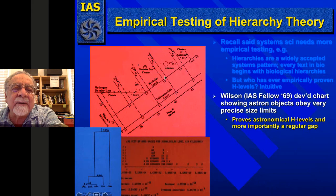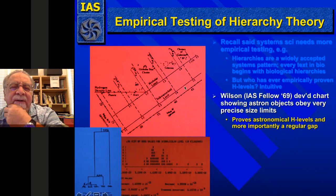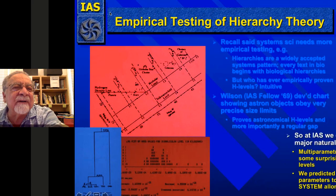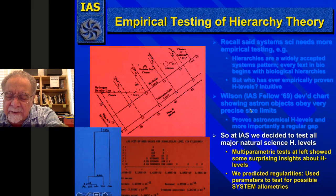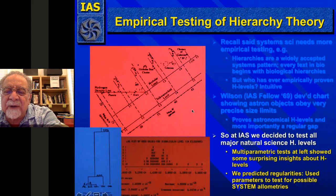Now, since then, I'm not sure we could get the same answer because there are outliers. Like, if we were looking at eggs in biological creatures, you have the ostrich egg which is huge compared to others. Those outliers might affect the equation, but if you took a probability distribution you might still establish Wilson's equation. We were saying he was proving astronomical levels, so we thought we'd try it for biological levels — could we see through multi-parametric tests some surprising insights into hierarchical levels?